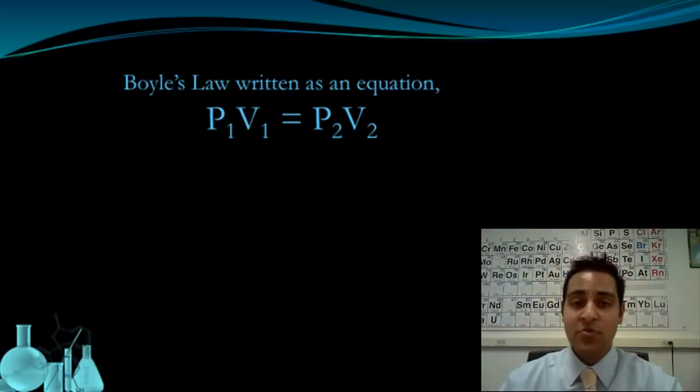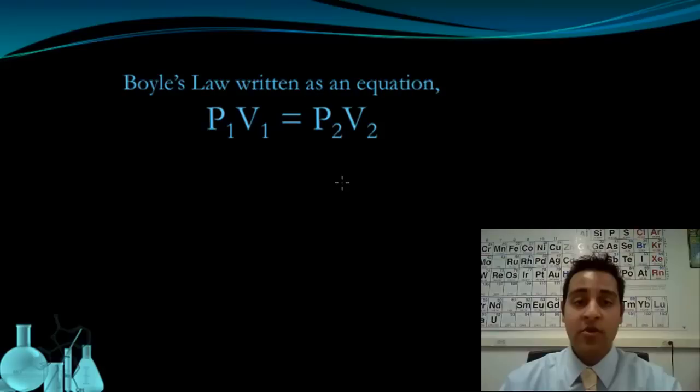Now we can also make predictions with Boyle's Law using this equation. The relationship we wrote down earlier can be rewritten as an equation between initial conditions on the left and ending conditions on the right. So this equation is going to allow us to make predictions.